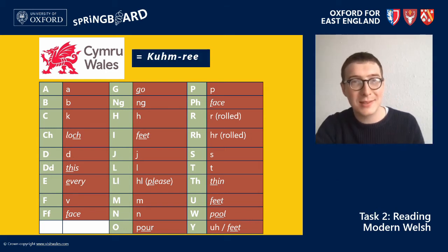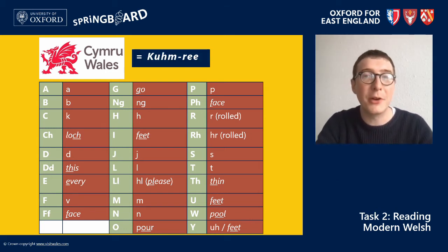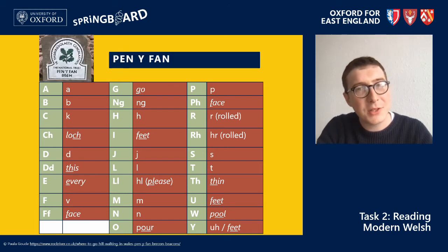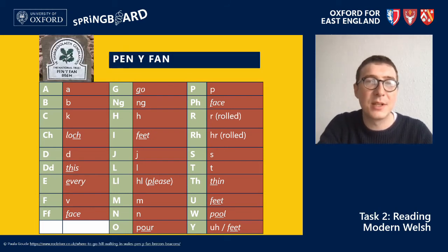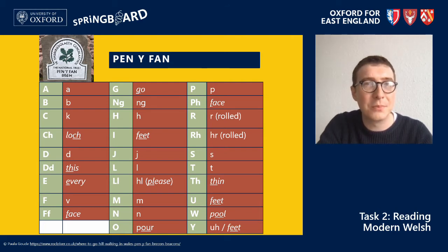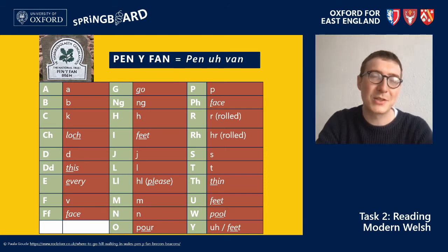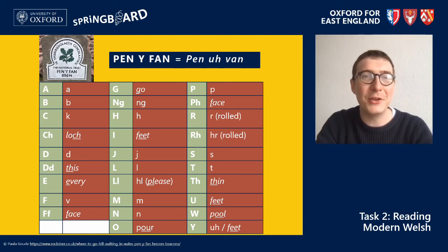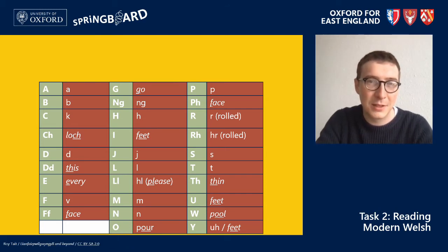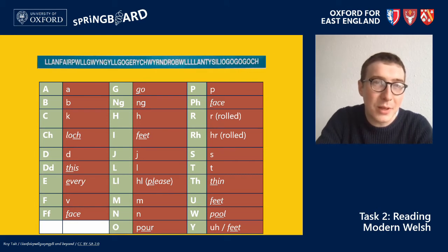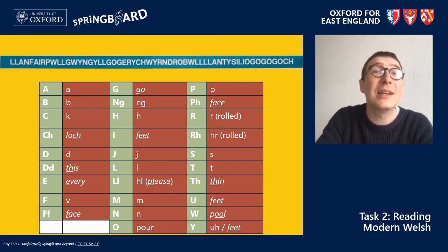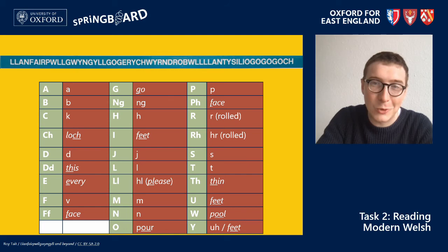The Welsh word for Wales is pronounced Cymru. What about this one? This is the highest mountain in South Wales, which you may have visited or might do in the future — how is it pronounced? Have a go. Yes, we pronounce this Pen y Fan. And the truth is, you can now even read Llanfairpwllgwyngyllgogerychwyrndrobwllllantysiliogogogoch.